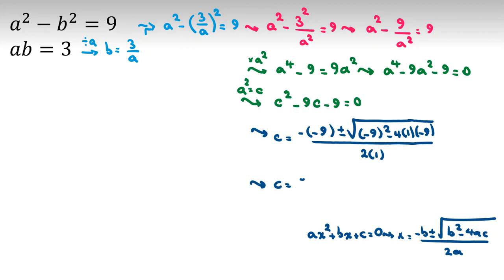Now, next step c will be negative negative 9 will be 9 plus minus square root of negative 9 squared is 81. Minus 4 times negative 9 plus 36. All over 2. So, it will be 9 plus minus 117 all over 2.